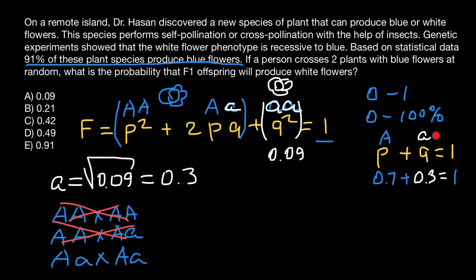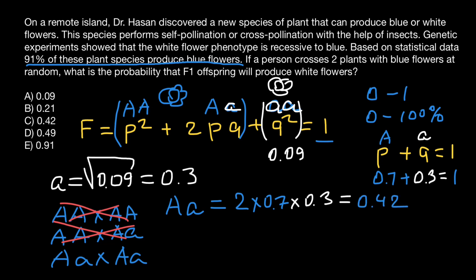Now that we know the frequency of the dominant and recessive alleles, let's find the probability of the heterozygous genotype in this gene pool. The frequency of genotype Aa equals 2pq, so 2 times 0.7 times 0.3, which gives us 0.42. Putting this into our formula, the frequency of the heterozygous genotype is 0.42, and the frequency of the homozygous dominant genotype is 0.7 times 0.7, which equals 0.49. If we add all three numbers — 0.49, 0.42, and 0.09 — we get 1, or 100%.